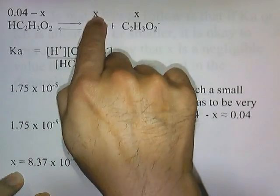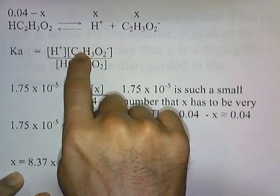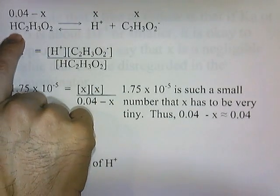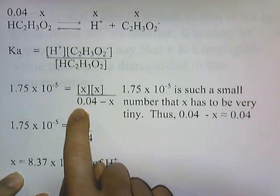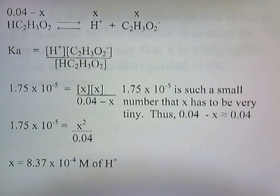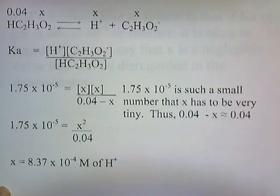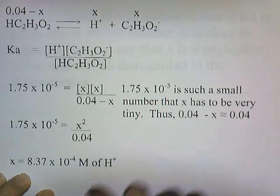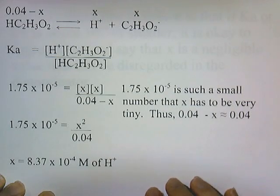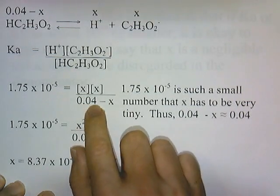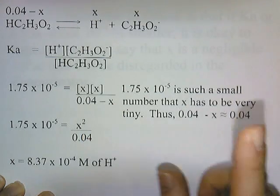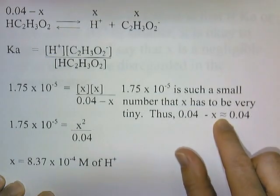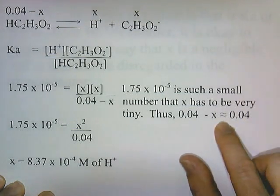In place of these symbols, we write the concentrations: concentration of H+ is x, concentration of acetate is also x, and the concentration of acetic acid remaining is 0.04 minus x on the bottom. Now all we have to do is solve for x, which will tell us the amount of H+ in solution. You could solve this normally — you'd end up with a quadratic equation and use the quadratic formula. But there is a little trick we can use: 1.75 times 10 to the negative fifth is such a small number that x has to be very tiny. Thus, 0.04 minus x is virtually equal to 0.04.